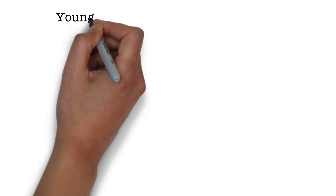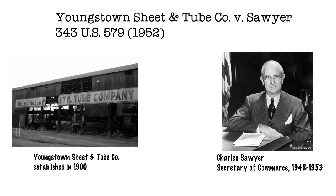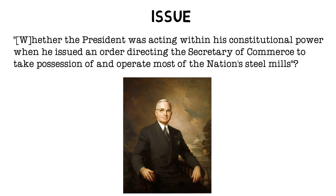Which brings us to today's case: Youngstown Sheet and Tube Company v. Sawyer. The case was decided on June 2, 1952. The question before the court was whether or not President Truman exceeded his powers by making a seizure of all steel mills in the United States. Youngstown Sheet and Tube Company was one of those steel mills.